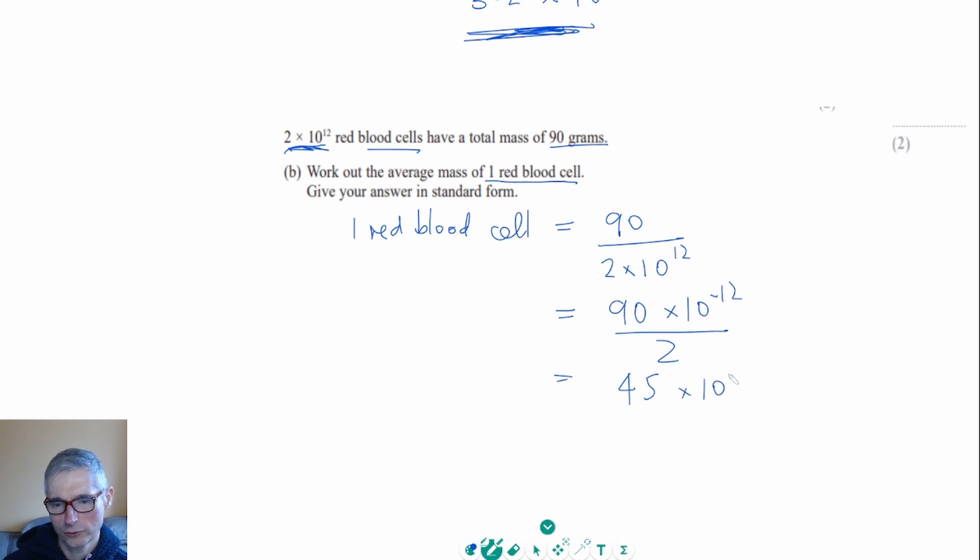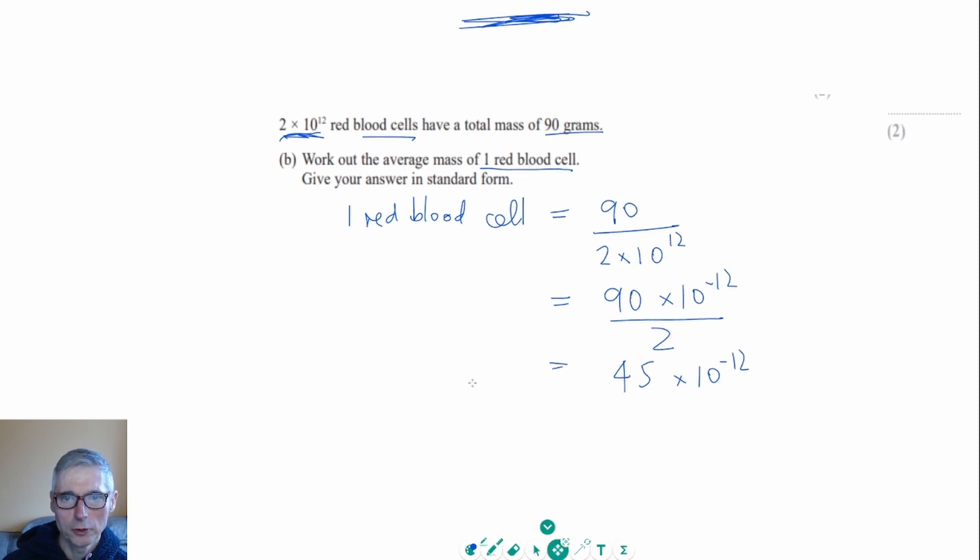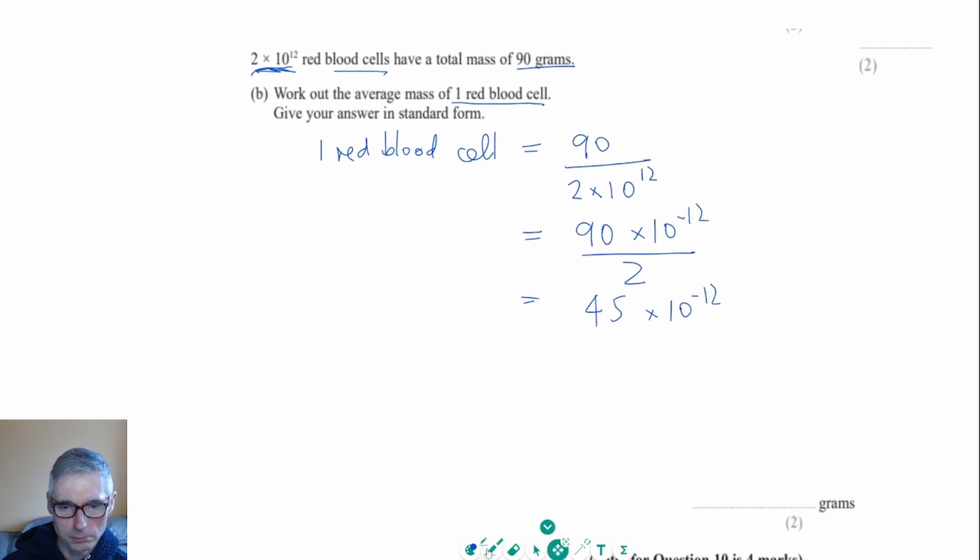And that might look like that's in standard form - it almost is - but the thing is we've actually got a number bigger than 10 there, and in fact it's got to be one digit in front of the decimal point. So really we need that to be 4.5 times 10 to a power for it to be in standard form.